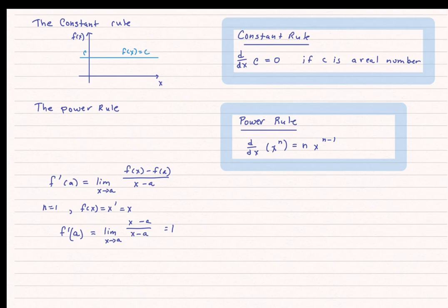Using the definition of f prime of a, I find the limit as x approaches a of x minus a divided by x minus a, which is simply equal to 1. This does match my power rule — the n is 1, so the derivative of x to the first power is 1 times x to the 1 minus 1, which is x to the 0 power. Anything to the 0 power is 1, therefore my power rule confirms this equals 1.